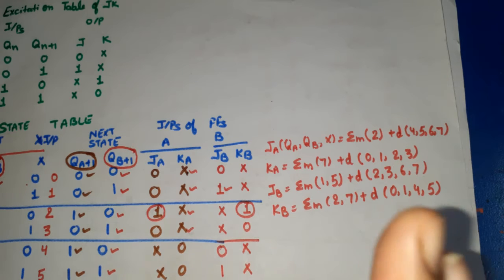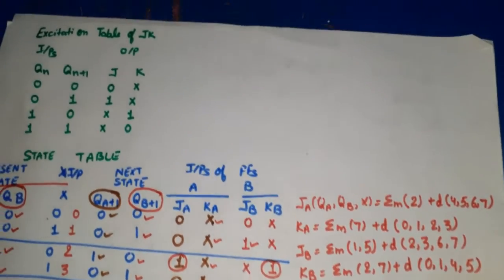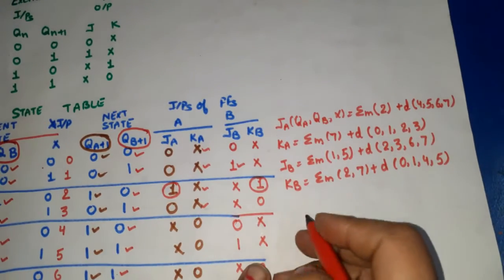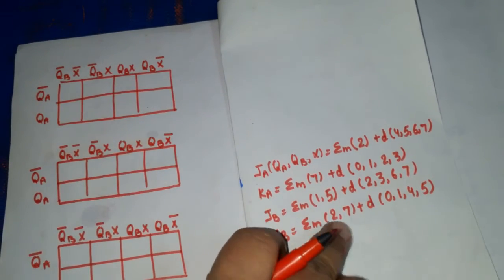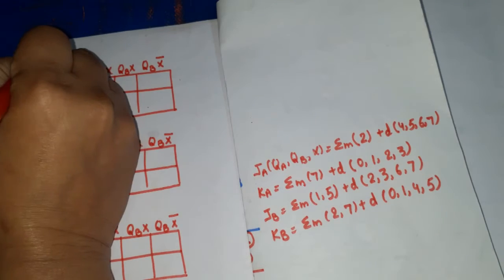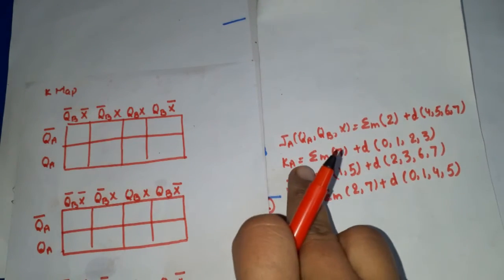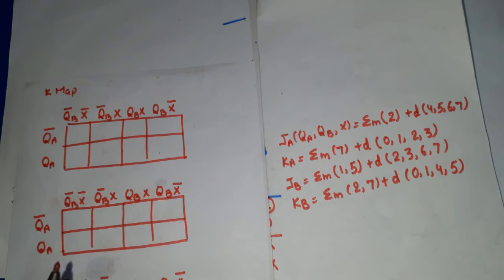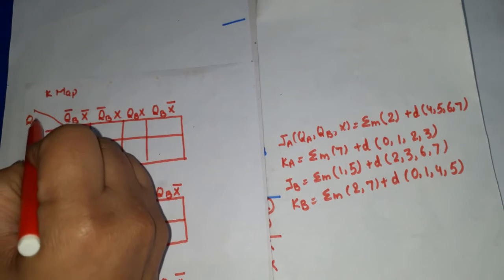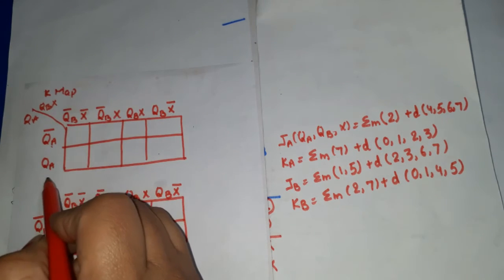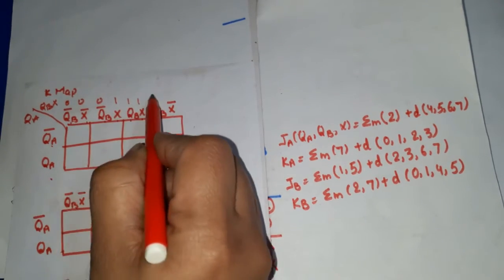We need 4 K-maps for the 4 functions JA, KA, JB, and KB, each with 3 variables. The K-map axes are QA on one side, and QB and X on the other side, with columns ordered: QB-bar·X-bar, QB-bar·X, QB·X, QB·X-bar.